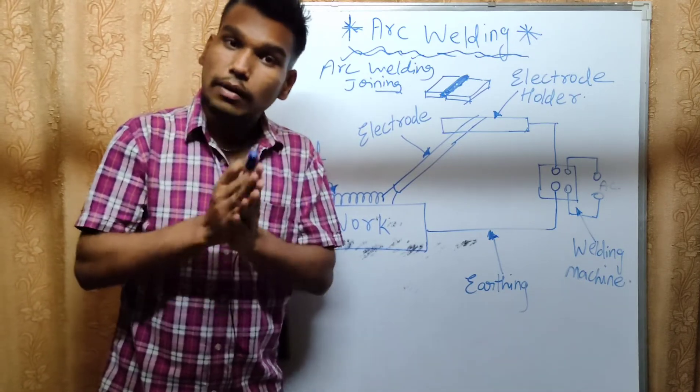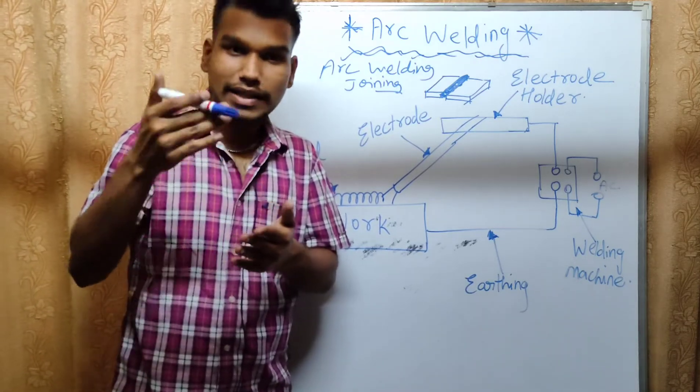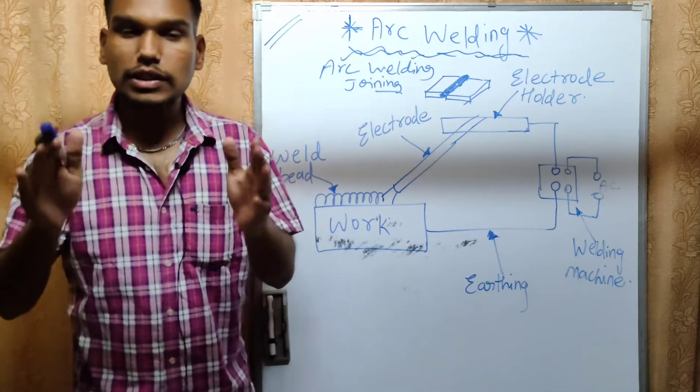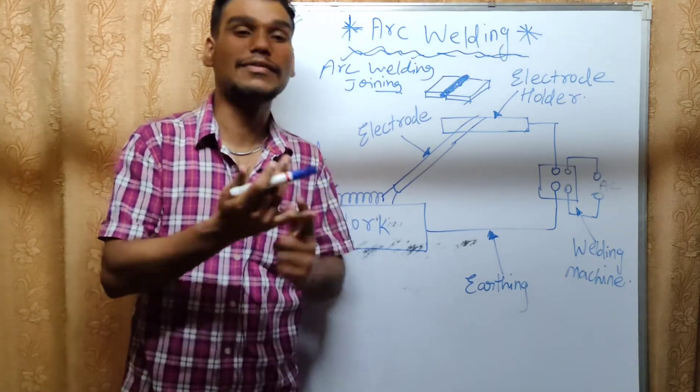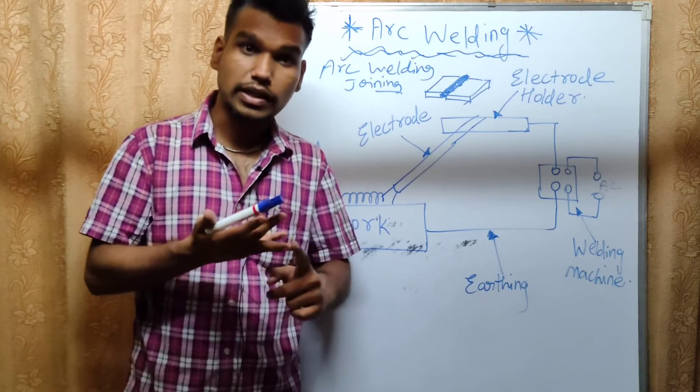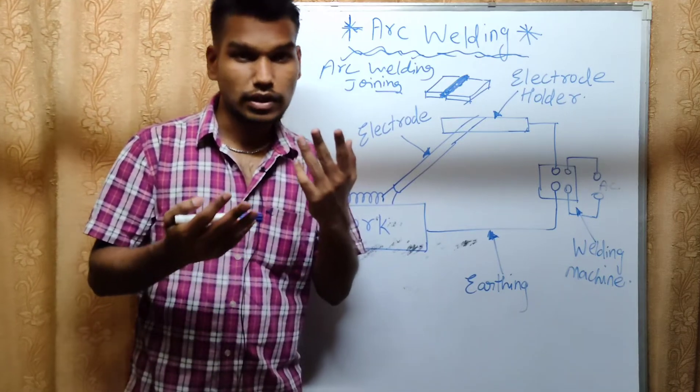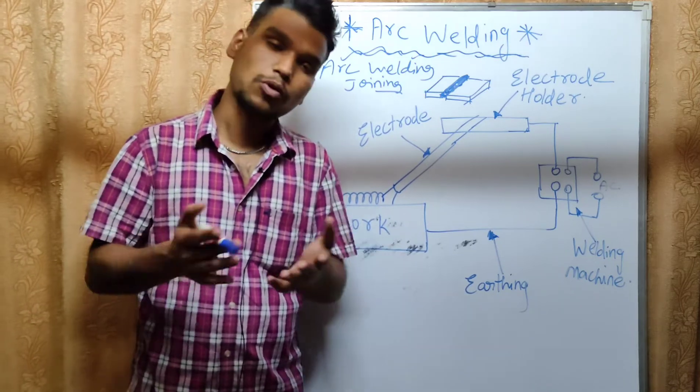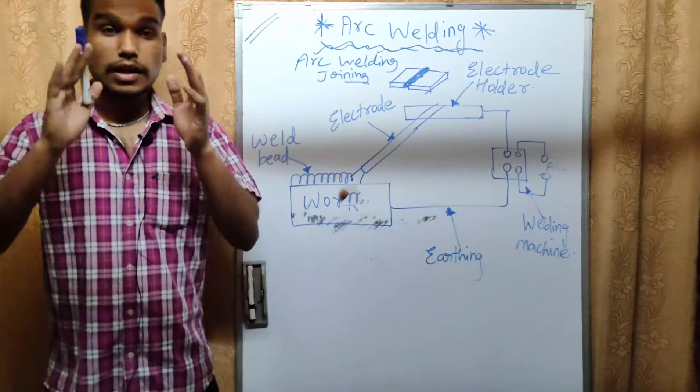We use filler material with the welding beads. We have mild steel rod or MS rod that we use. After this, there are many types of welding: gas welding, gas cutting, laser beam welding, electron beam welding, plasma welding, and resistance welding.